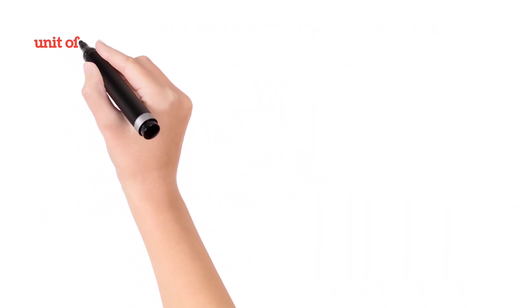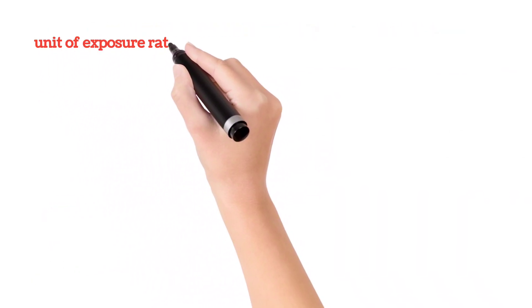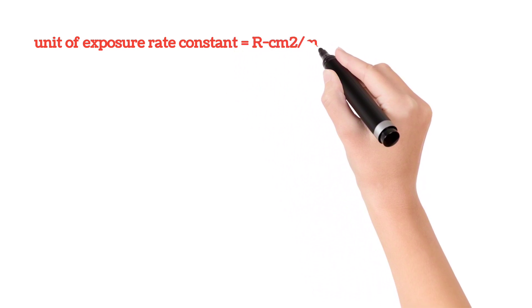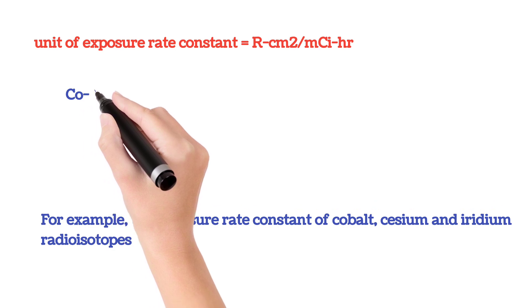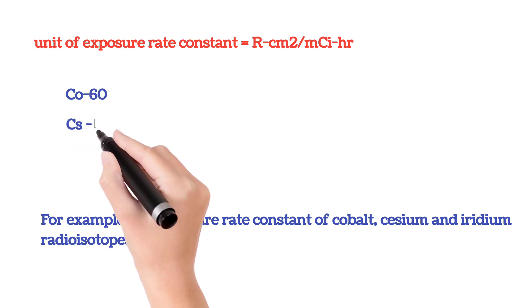The unit of exposure rate constant is roentgen centimeter square per millicurie hour. For example, the exposure rate constant of cobalt, cesium, and iridium radioisotopes are given in this table.